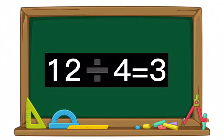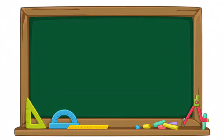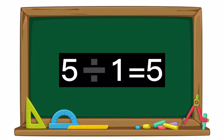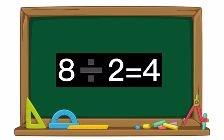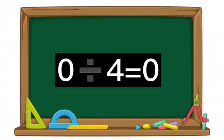Twelve divided by four equals three. Five divided by one equals five. Eight divided by two equals four. Zero divided by four equals zero.